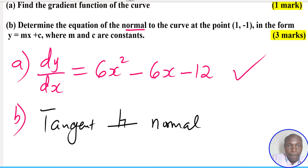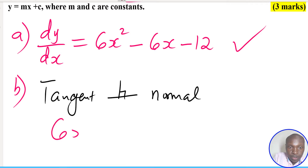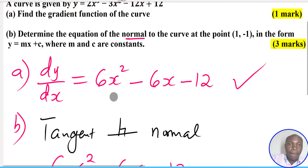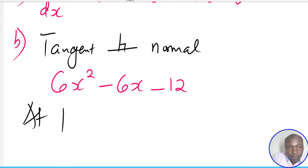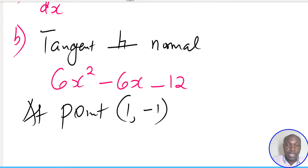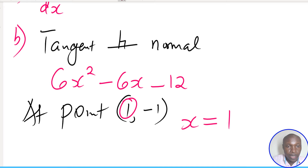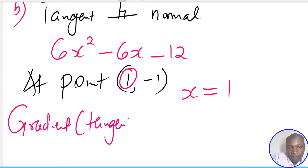To get the gradient of the tangent at the point (1, -1), we use the gradient function. The gradient function is 6x² - 6x - 12. We substitute the x-value at this point into the gradient function. At the point (1, -1), the value of x is equal to 1.